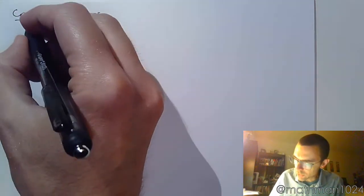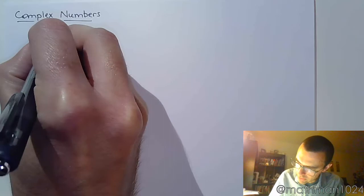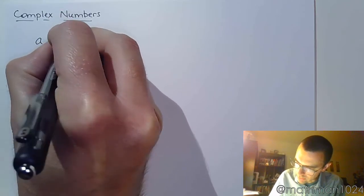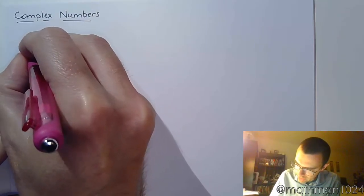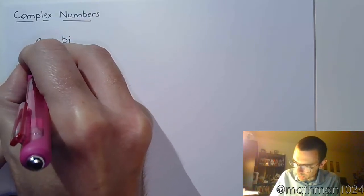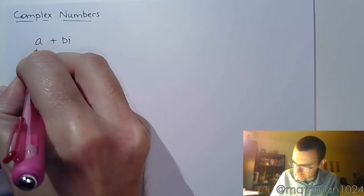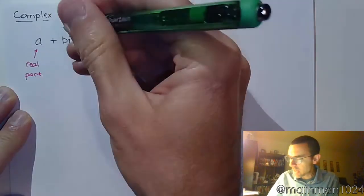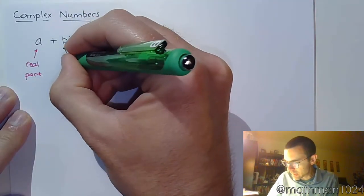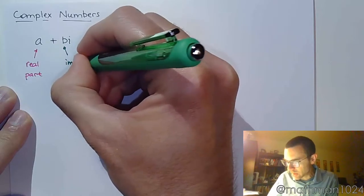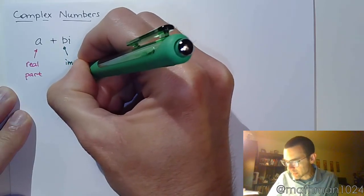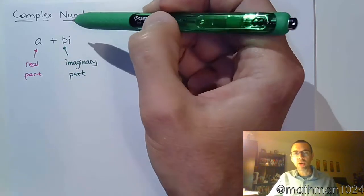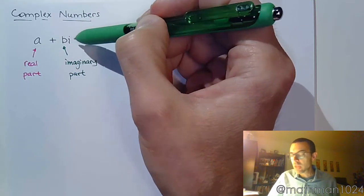Complex numbers take on the form a plus bi. In this form, a is called the real part and b is called the imaginary part. So the imaginary part is the piece that's connected to the i.